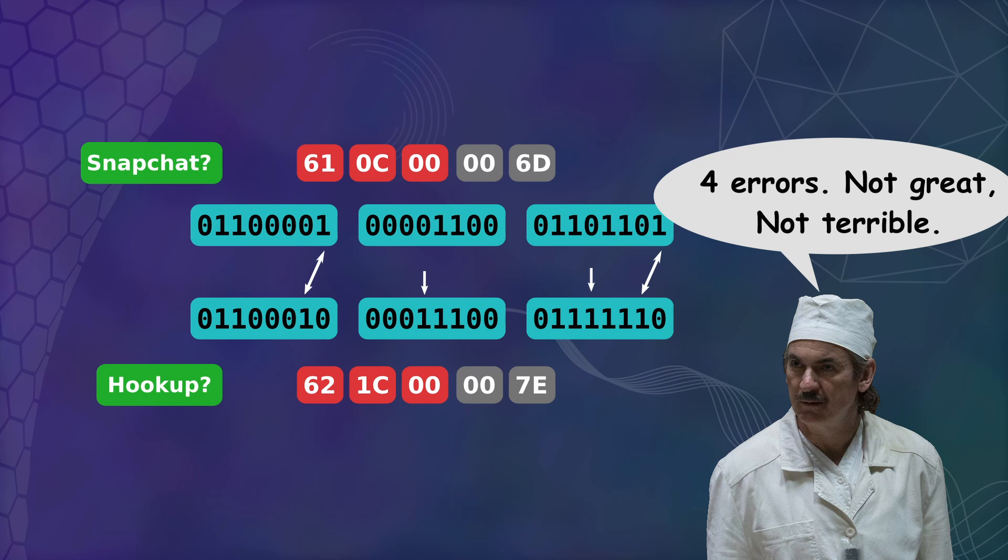With the second byte we now need four errors in precise locations for the 6-1 message to be mistaken for 6-2. It's still a terrible error detection strategy, but it's significantly stronger than not having that second byte.